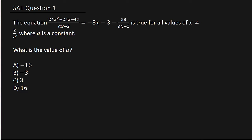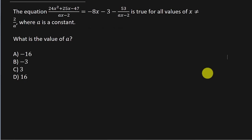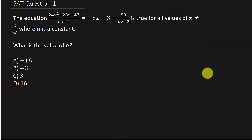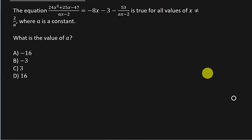So let's just go ahead first and let's write the equation down. Alright, so we've got 24x squared plus 25x minus 47 over ax minus 2 equals negative 8x minus 3 minus 53 over ax minus 2.